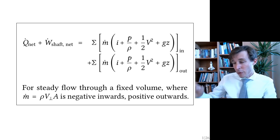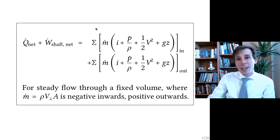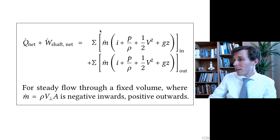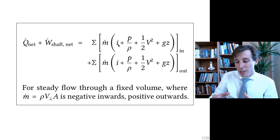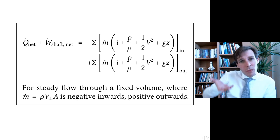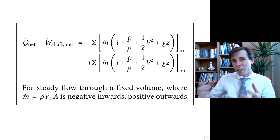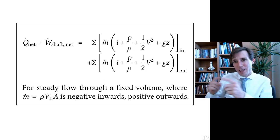This equation tells us everything that can happen to the different forms of energy. On the left you have the power added from outside as heat, and the power added from outside as work. On the right side you have the difference between the inlet and the outlet in terms of energy flow. Energy can take different forms: there's the mass flow rate multiplied by a sum of terms — the internal energy, pressure divided by density, kinetic energy (one half v squared), and gz, which is altitude potential energy with z being positive upwards.